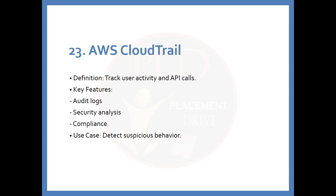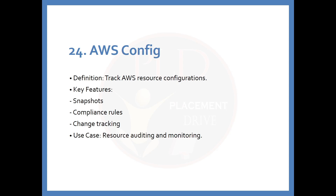The 23rd service is AWS CloudTrail. The definition is: track user activity and API calls. Key features include audit logs, security analysis, and compliance support. The use case is detecting suspicious behavior. The 24th service is AWS Config. The definition is: track AWS resource configurations. Key features include snapshots, compliance rules, and change tracking. The use case is resource auditing and monitoring.